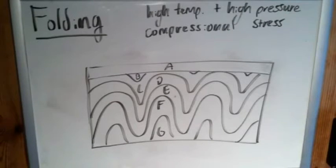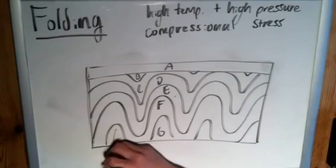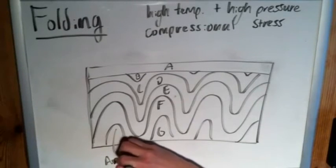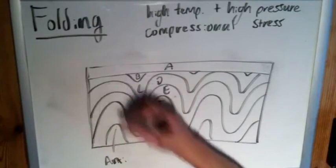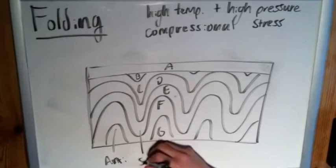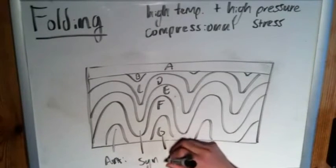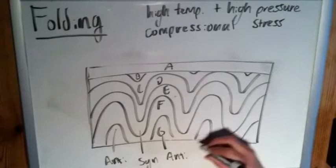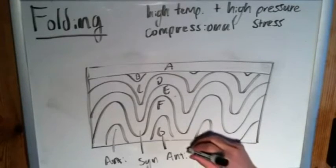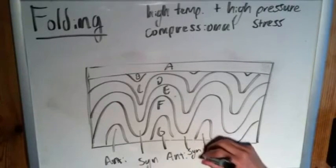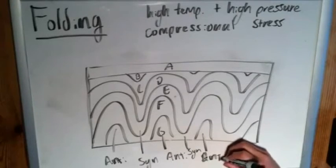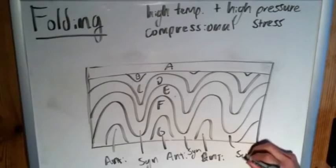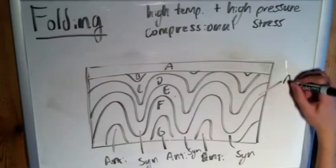So we can just start labeling these pieces. This is an antiform because currently the limbs are opening downwards and it's pointing upwards. Right here we observe a sinform, another antiform right here, sinform right there, antiform right here, sinform right here, and antiform right here.